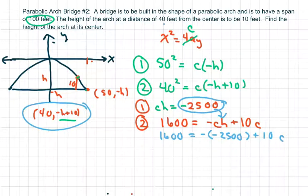So when you subtract, this tends to be a positive. So we're going to subtract negative 2,500 and we get negative 900 equals 10C. And so C, therefore, is negative 90.